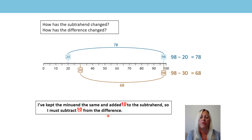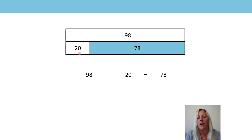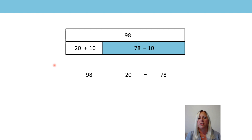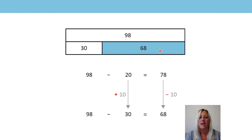So is he paying more or less with the £30 voucher? He's actually going to be paying less — he's now paying £68. If we put it onto a bar model, I can see I've still got my minuend of £98 at the top, because that's the total he has to pay. He thought he had a £20 voucher, so that's my subtrahend and he thought he was going to pay £78. But in actual fact, he had a £30 voucher, so we're adding 10 to our subtrahend, which means we subtract 10 from our difference. So 98 subtract 30 equals 68.